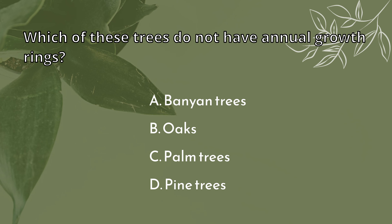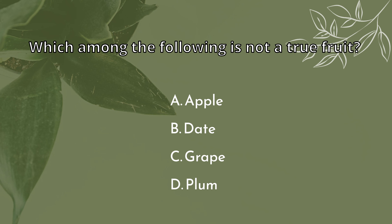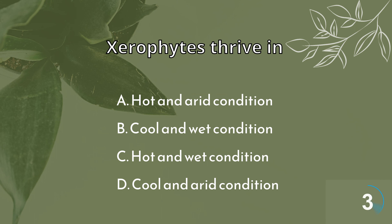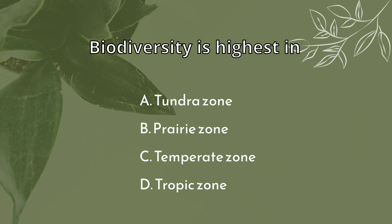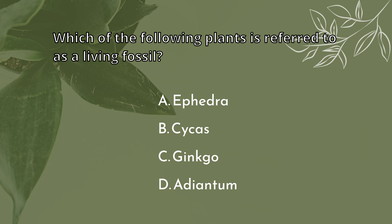Which of these trees do not have annual growth rings? Palm trees. Which among the following is not a true fruit? Apple. Xerophytes thrive in hot and arid conditions. Biodiversity is highest in the tropic zone. Which of the following plants is referred to as a living fossil? Ginkgo.